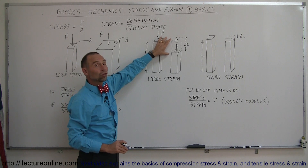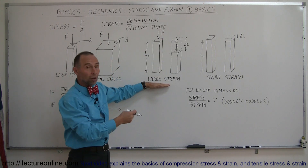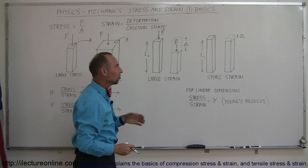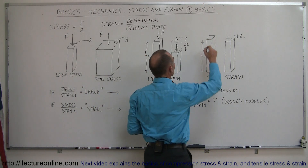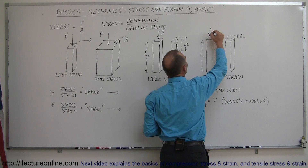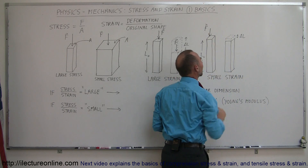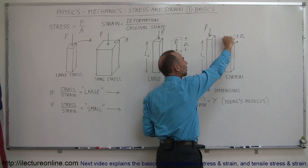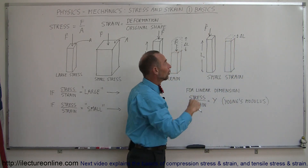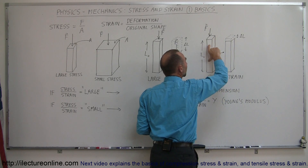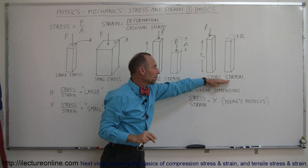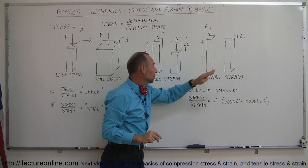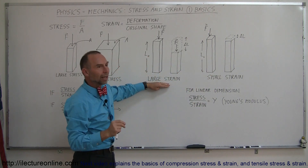If the deformation is large, we expect a large strain. In other cases, under maybe the same amount of force, the beam may not experience the same amount of deformation. If the deformation is relatively small, the ratio of the deformation divided by the original length is much smaller, so we can say there's a small amount of strain on this beam and a large amount of strain on that beam.